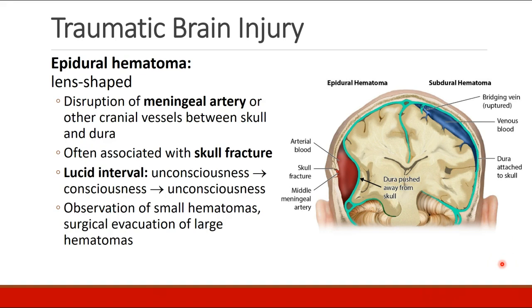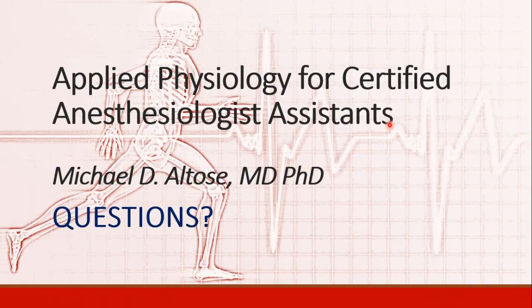An epidural hematoma is typically described as lens-shaped on imaging. It occurs when there is disruption of the meningeal artery or other cranial vessels between the skull and the dura, and is often associated with skull fracture. Patients may have a lucid interval — first unconscious at the time of injury, then conscious, then losing consciousness again. Small epidural hematomas can be observed, while larger ones typically require surgical evacuation. We'll stop here with this recording; please contact me with any questions.